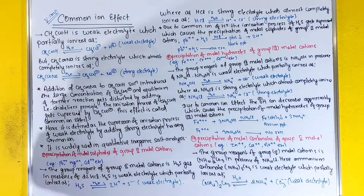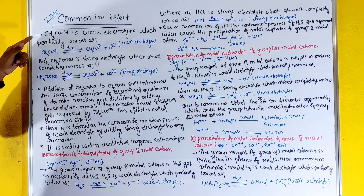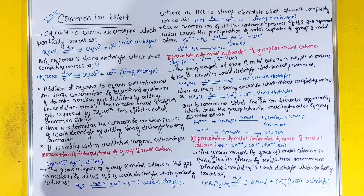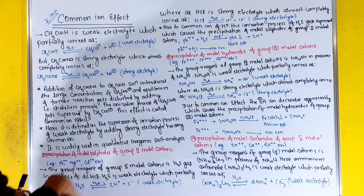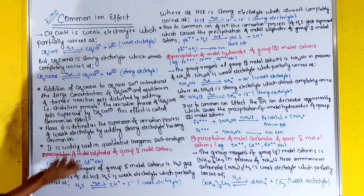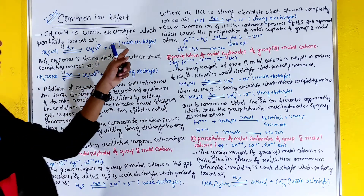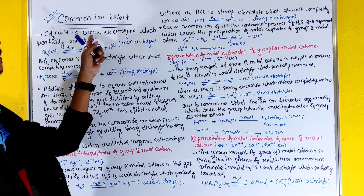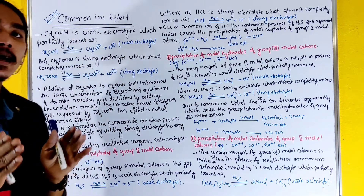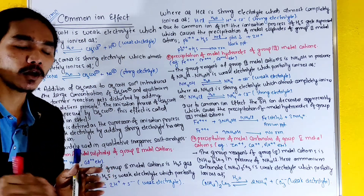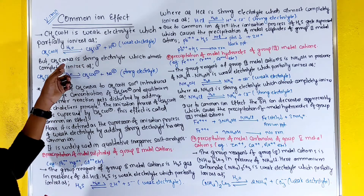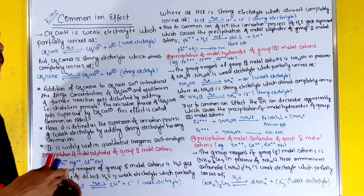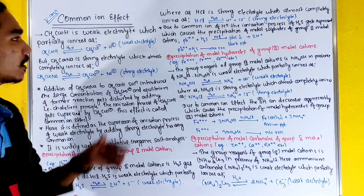What is the common ion effect? The first example is a weak electrolyte. CH₃COOH is a weak electrolyte which is partially ionized. That means we have a weak electrolyte which undergoes partial ionization.